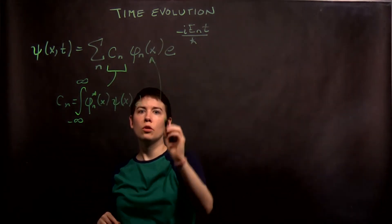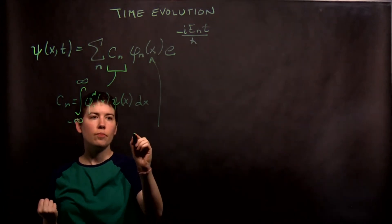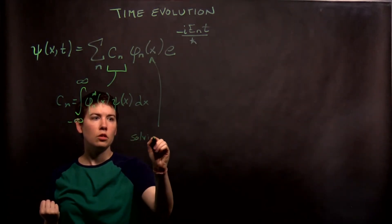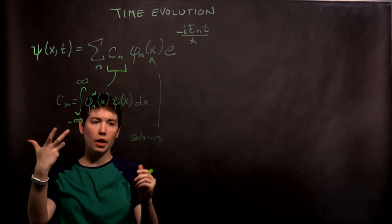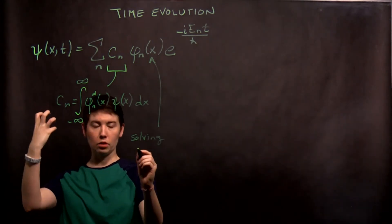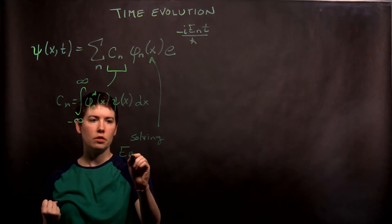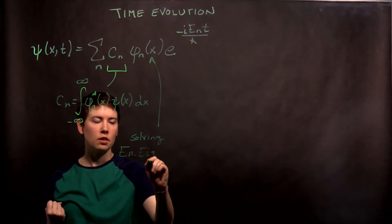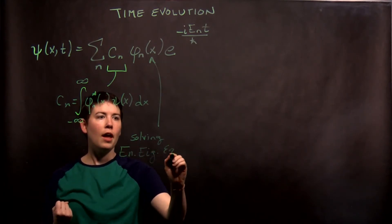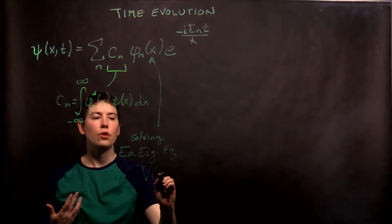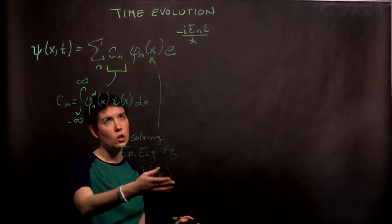Our energy eigenstate, remember that phi is always meaning a specific energy eigenstate, star, and then your psi, and you have to do this to find what those c sub n are. Now this, we get from solving our energy eigen equation. So this is from solving the energy eigen equation.